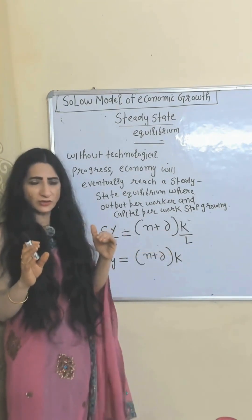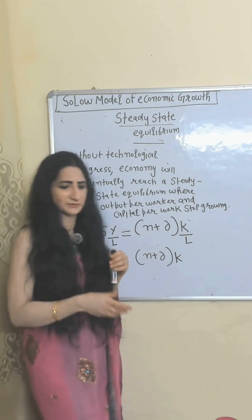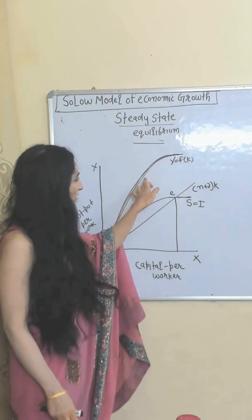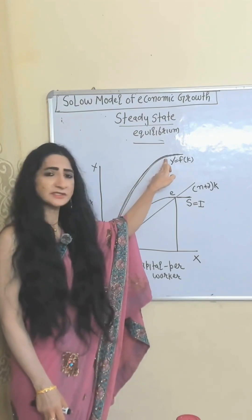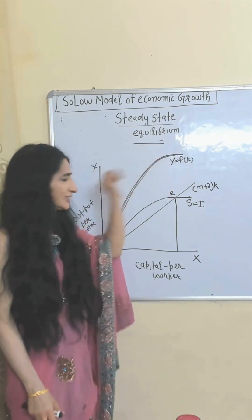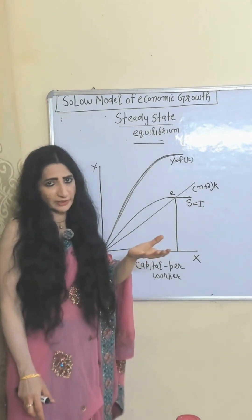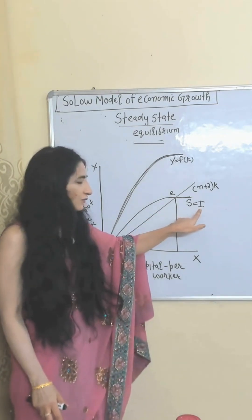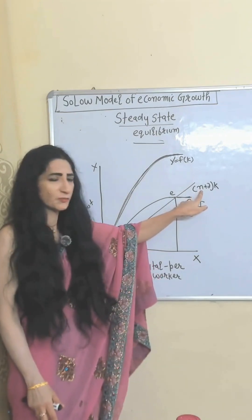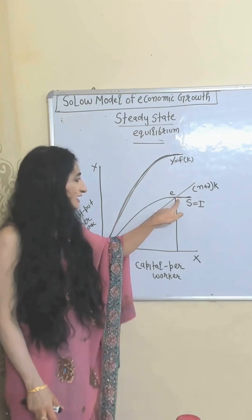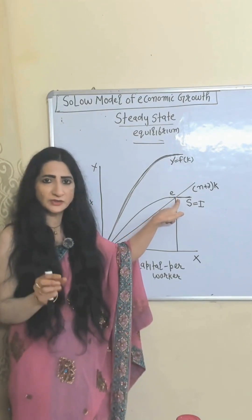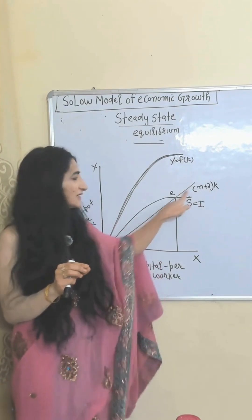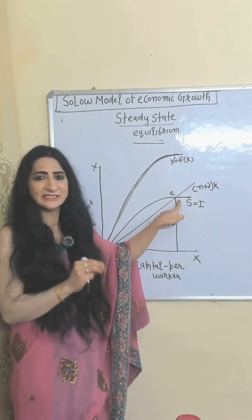That's why for long-term sustainable growth, technological progress is a must. In the graph, as capital per worker increases, output per worker also increases but eventually becomes constant due to steady state equilibrium. As output per worker increases, income increases and saving also increases. The saving curve equals investment. The straight line shows population growth plus depreciation. At point E, capital per worker and output per worker stop growing — investment just covers the need of growing population and depreciation. That's why point E is called the steady state equilibrium.